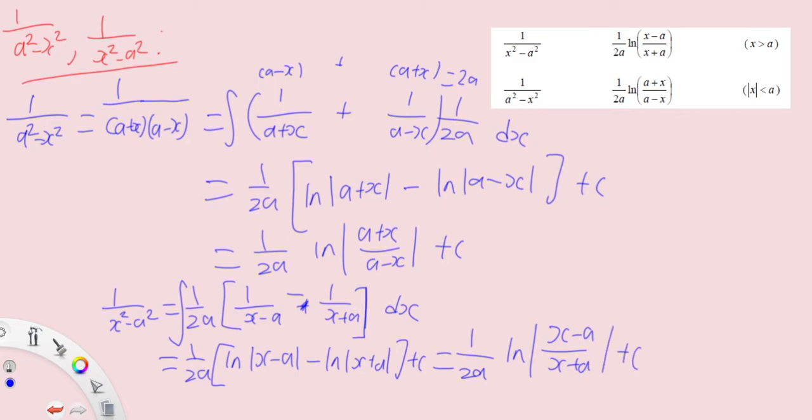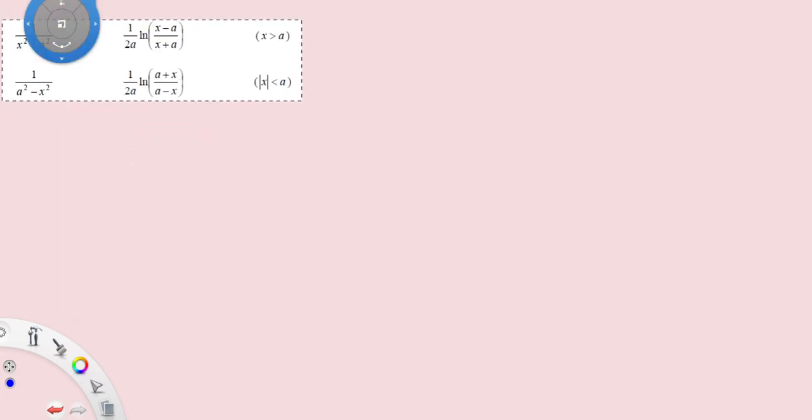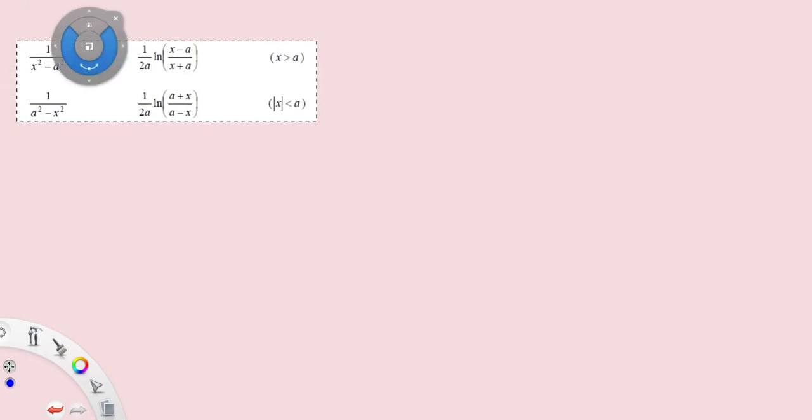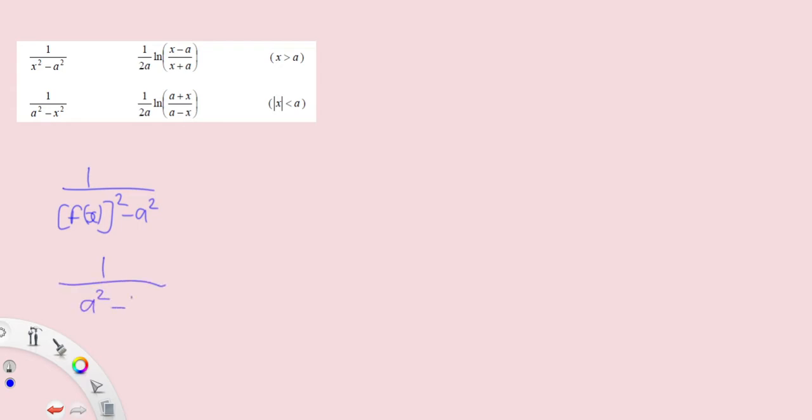As such we can arrive to a formula. Another general formula, so we have 1 over this time around fx square minus a square and 1 over a square minus fx square.